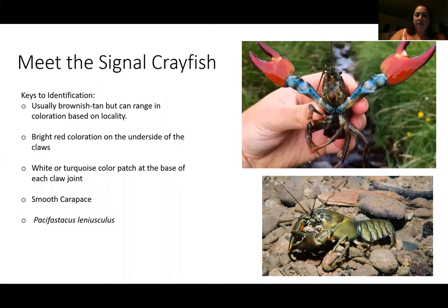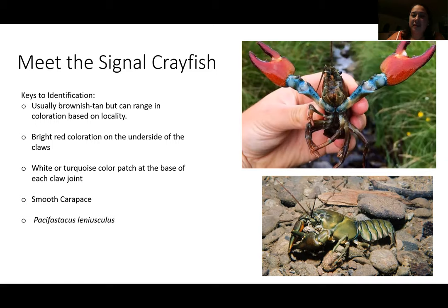A little bit about the crayfish: on the bottom is what you usually see — it looks usually tan-brown. But I also thought this crayfish looks cool because it does have bright red and blue on its claws and legs, so they're pretty easy to identify. A key feature that these have is a smooth carapace. Some native crayfish are going to have bumps or ridges on them, and that's how you can tell if you're dealing with a native or an invasive.